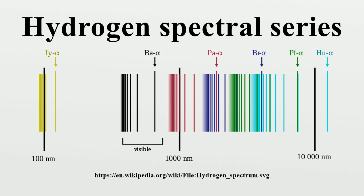The Humphreys series was discovered in 1953 by American physicist Curtis J. Humphreys. Further series are unnamed, but follow exactly the same pattern as dictated by the Rydberg equation. Series are increasingly spread out and occur in increasing wavelengths. The lines are also increasingly faint, corresponding to increasingly rare atomic events.